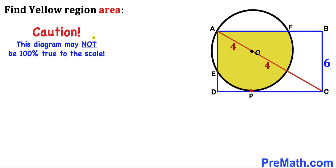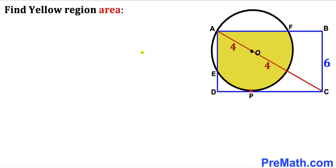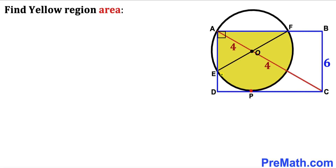Please keep in mind that this figure may not be 100% true to scale. Let's get started. First, let's make an observation: since ABCD is a rectangle, all its angles are going to be 90 degrees each.